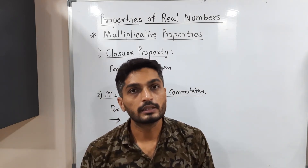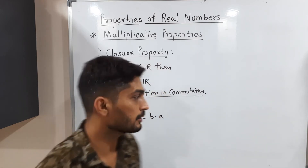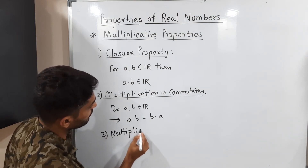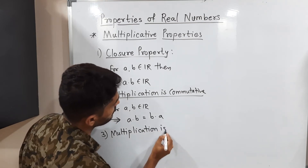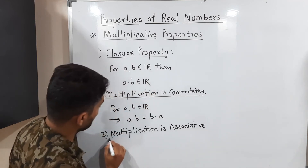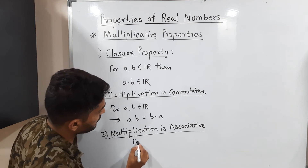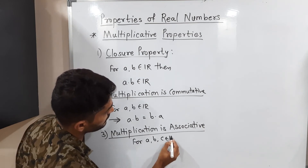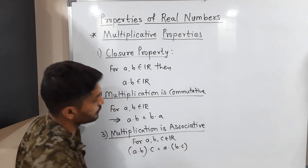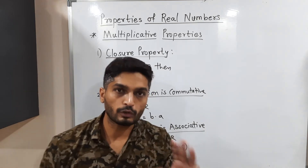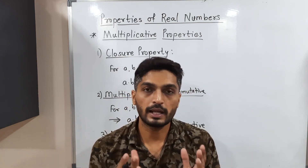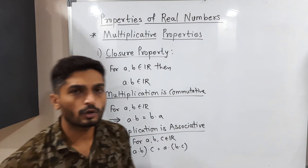The third multiplicative property is associative property — multiplication is associative. For three elements a, b, c, we have (a into b) into c equals a into (b into c). When you take a product of three numbers, you can multiply the first two numbers first or the last two numbers first — you will get the same product.